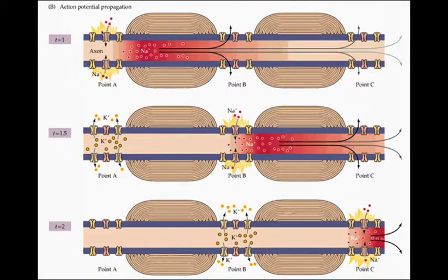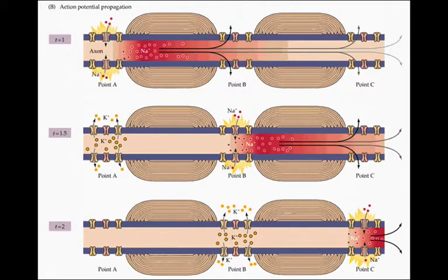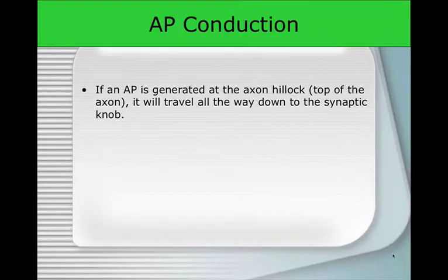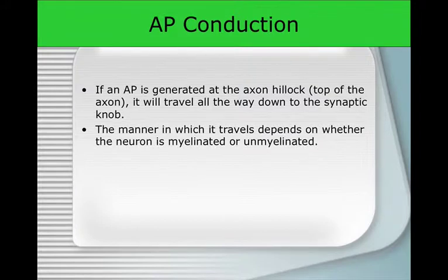The depolarization occurs in succession — it depolarizes at one point, then the next, then the next. This is a myelinated nerve fiber, so depolarization jumps between nodes. There is also a wave of repolarization, with potassium going out to repolarize each section in turn. The action potential is conducted from the axon hillock at the top of the axon and travels down to the synaptic knob. The manner in which it travels depends on whether the neuron is myelinated or unmyelinated.